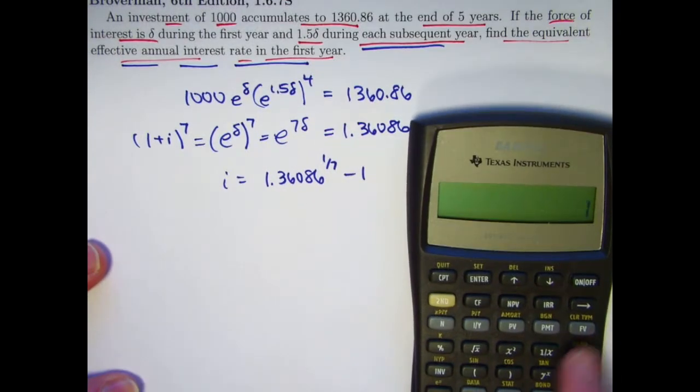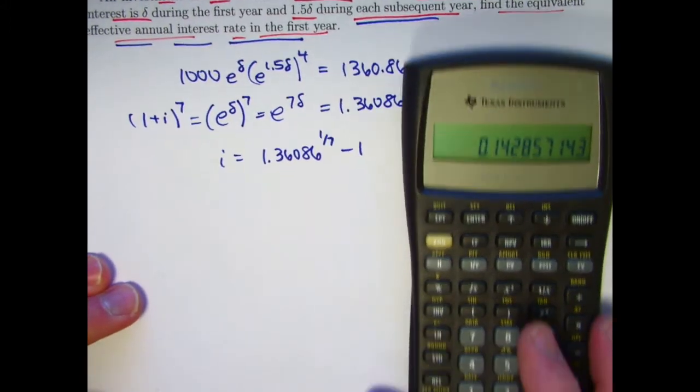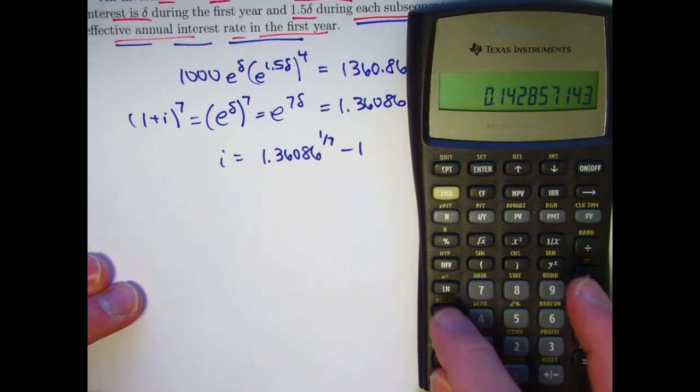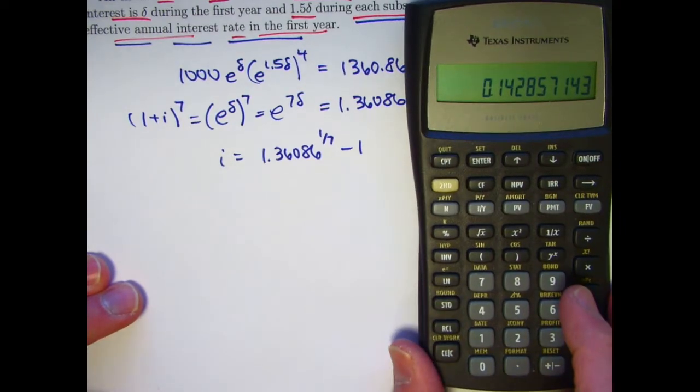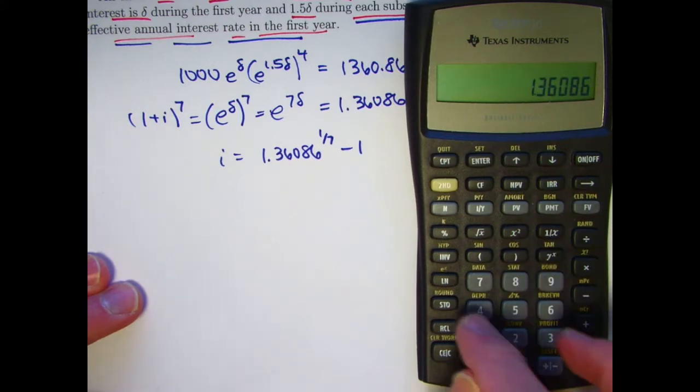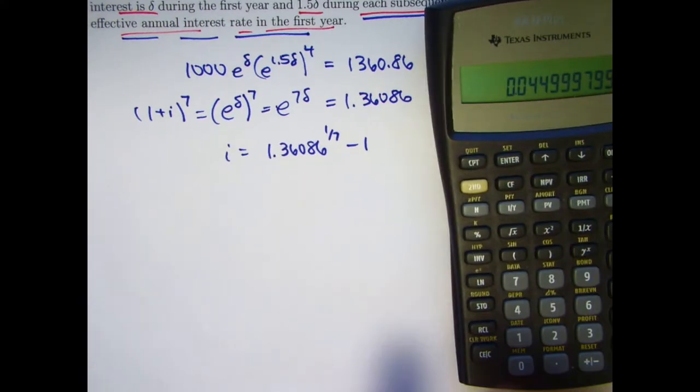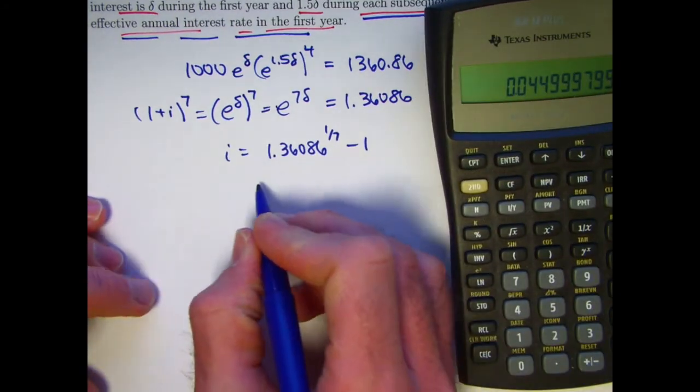1 7th is about 0.142857. Let me store that in register 0. And then I take 1.36086 to that power, recall it from register 0, and then subtract 1. i is very close to 4.5%.